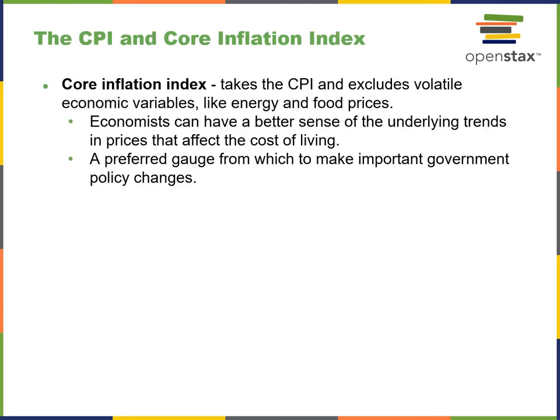The core inflation index takes the CPI and excludes volatile variables like energy and food prices. That's why you'll see those fluctuate up and down a great deal more. However, they still impact cost of living. Economists believe it's a better gauge to separate those out and make policy changes based on goods that have less volatility.